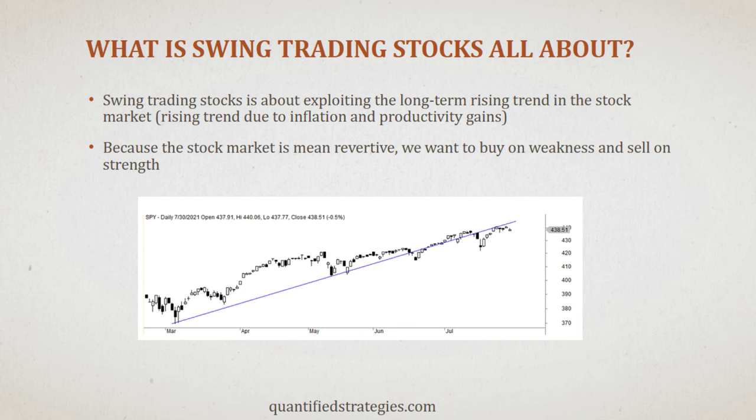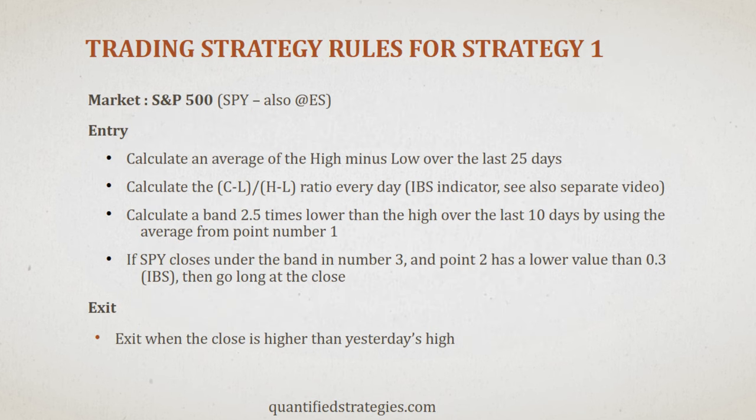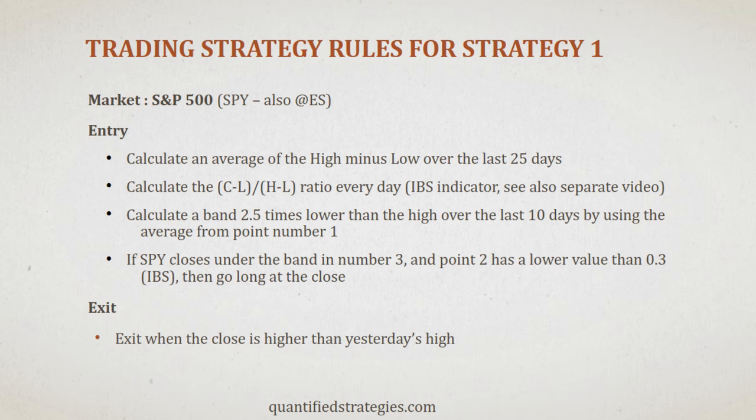Now let's jump to the trading rules of our first strategy. We want to enter when the price has dropped from a recent high. We calculate a band based on the 25-day average of the difference of the daily highs and lows. When SPY closes below the band deducted from the 10-day high and IBS is lower than 0.3, we go long. We have explained the IBS indicator in a separate video. We also need a rule for the exit — we sell when today's close is above yesterday's high.